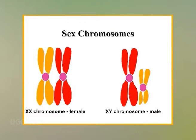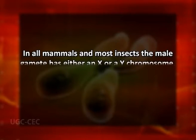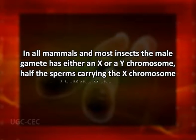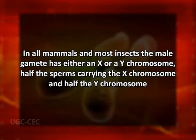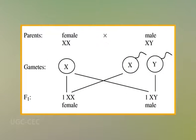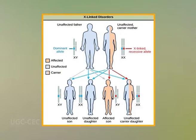Ultimately, environmental sex determination is also controlled by genes. Many animals have a pair of sex chromosomes which determines whether their offspring will be male or female. In all mammals and most insects, the male gamete has either an X or a Y chromosome — half the sperm carrying the X chromosome and half the Y chromosome. The male is thus heterogametic. The female gamete has only X chromosomes. The female is homogametic. A male offspring is produced when a Y sperm fertilizes an X egg, and a female offspring when an X sperm fertilizes an X egg. Hence, the male determines the sex of the offspring.